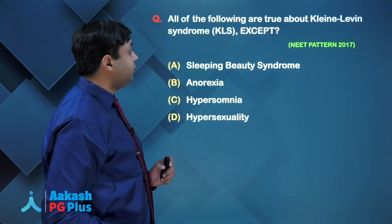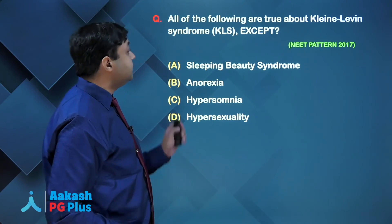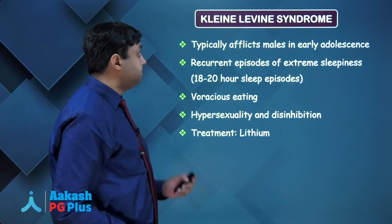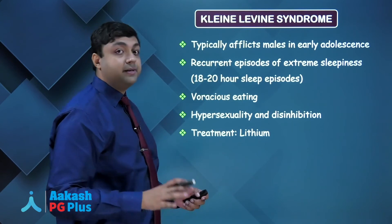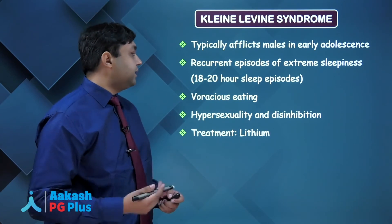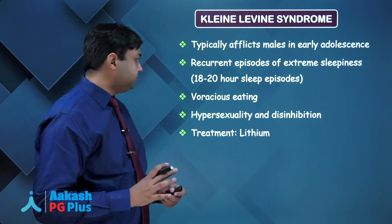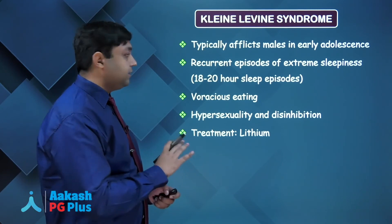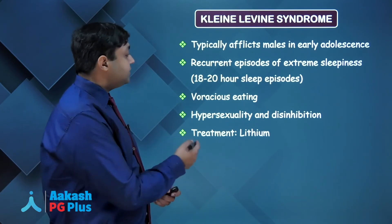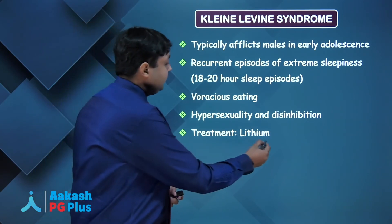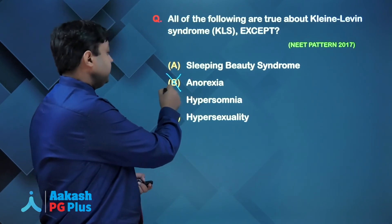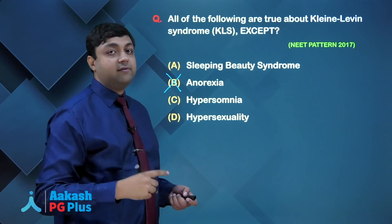The next question: all of the following are true about Klein-Levin syndrome except — sleeping beauty syndrome, anorexia, hypersomnia, and hypersexuality. KLS or Klein-Levin syndrome typically affects males in early adolescence. The person has recurrent episodes of extreme sleepiness, sleeping around 18 to 20 hours, and when they do wake up there is a voracious appetite. We also see hypersexuality and disinhibition. The treatment for KLS is lithium. What is not true is anorexia — the person will have a voracious appetite, not anorexia.